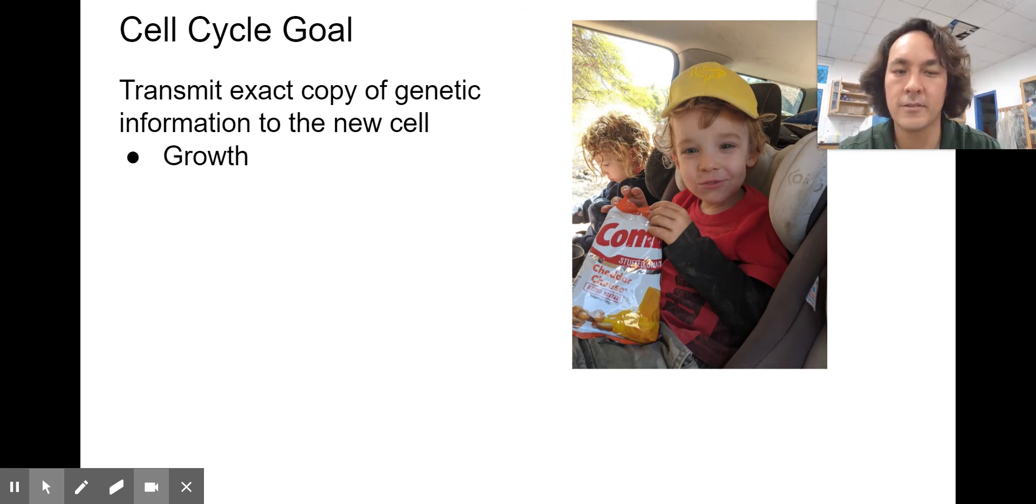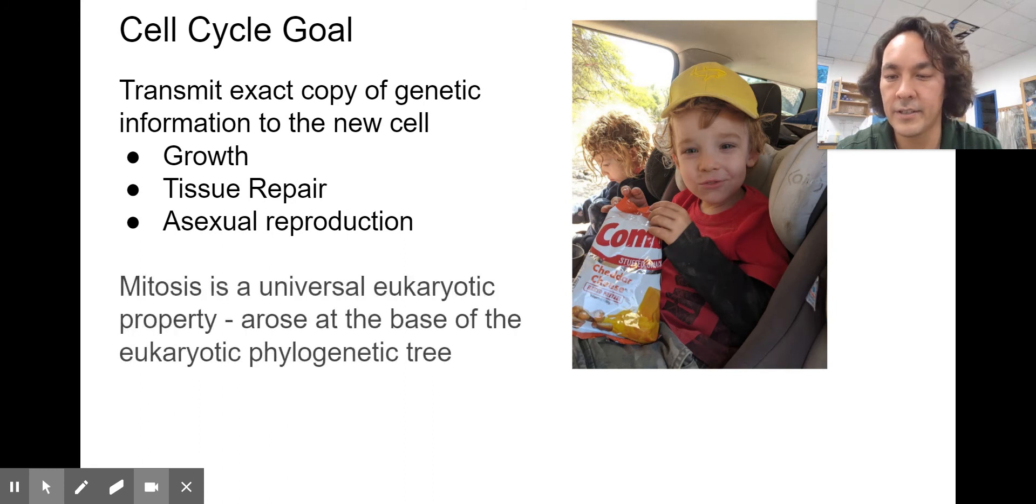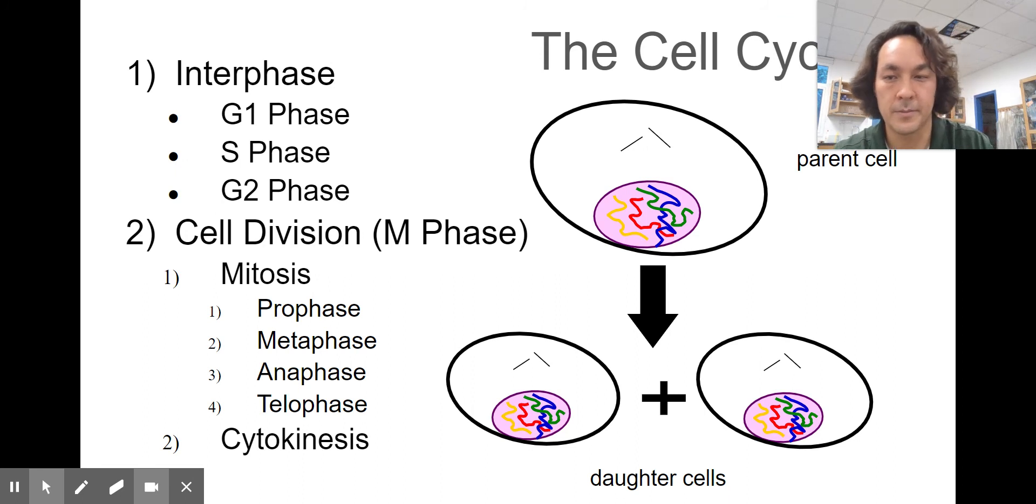It's important to realize that chromosome is made up of DNA wrapped around proteins and that inside the nucleus, it's just going to exist as chromatin, like spaghetti in a bowl. Let's talk about the goal of the cell cycle is to transmit the exact copy of genetic information. Here's my son and he's growing. He's going to end up being taller than me, I bet. He's using the cell cycle to make copies of his cells. It's going to repair tissue. So when he falls and cuts himself, it will help bacteria and protists to engage in asexual reproduction. Mitosis is a universal eukaryotic property. It rose at the base of the eukaryotic phylogenetic tree and it evolved from binary fission in prokaryotes, which we'll go over at the end.